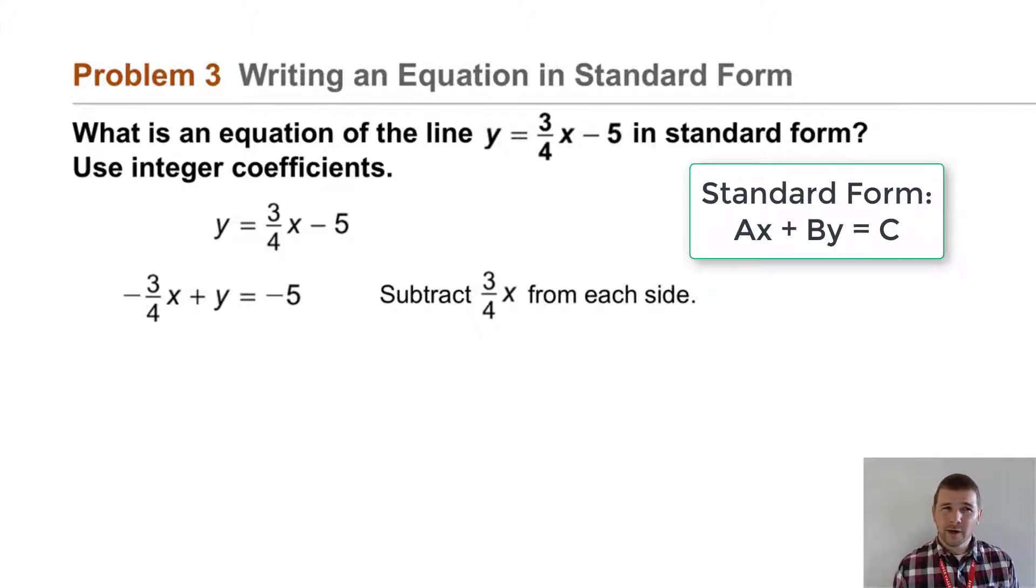But remember, whenever possible, we should use integer coefficients of x and y, not the fraction negative 3 fourths. So what we'll do here to cancel that denominator of 4 is we'll multiply each side of the equation, so every single term, by 4. Doing that, we arrive at negative 3x plus 4y equals negative 20.